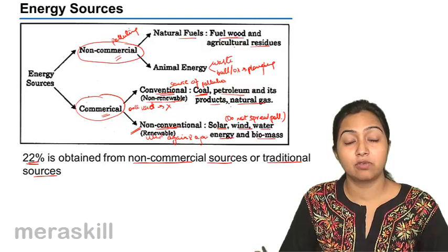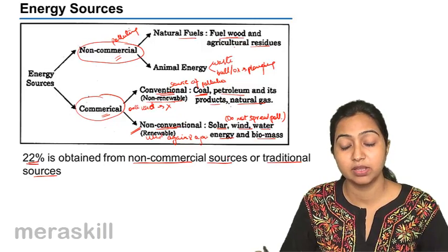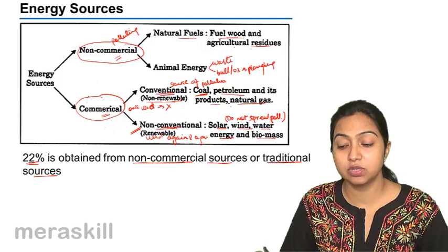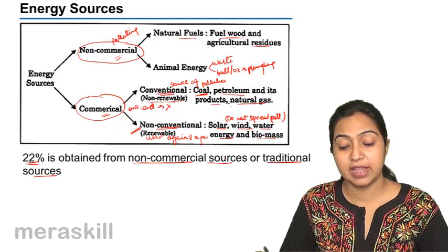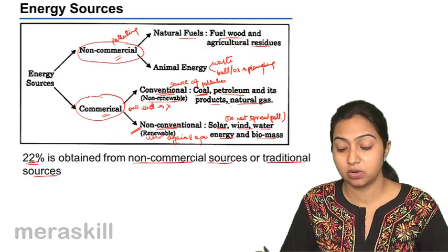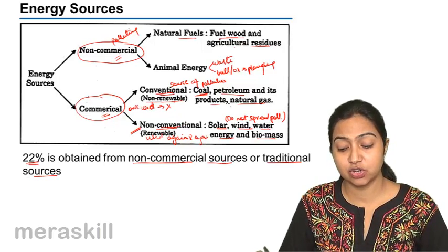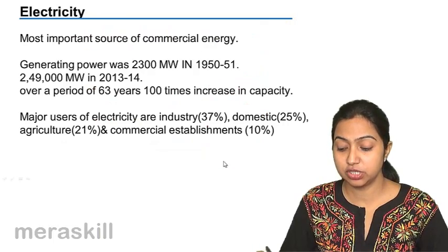So, to summarize: we get energy from non-commercial sources and commercial sources. Non-commercial are the traditional ones — natural fuels like firewood, agricultural waste, dung cakes, and animal energy from bulls and oxen. Commercial sources are the conventional and non-conventional ones. Conventional ones include coal, petrol, and gas, whereas the non-conventional ones are solar energy, wind energy, and water energy.